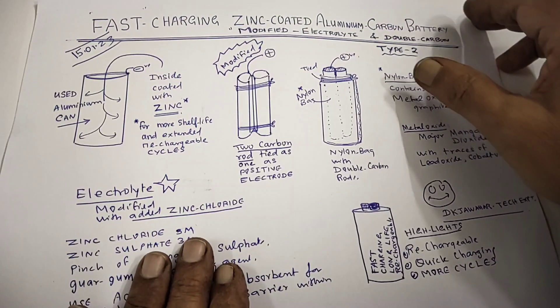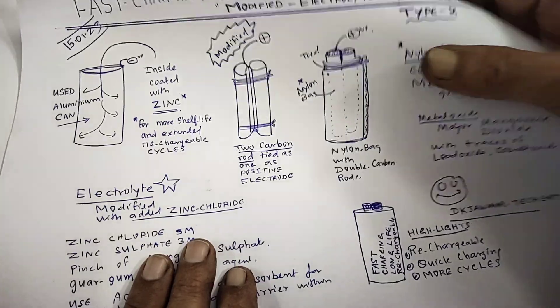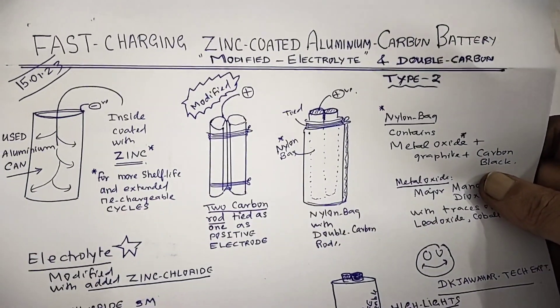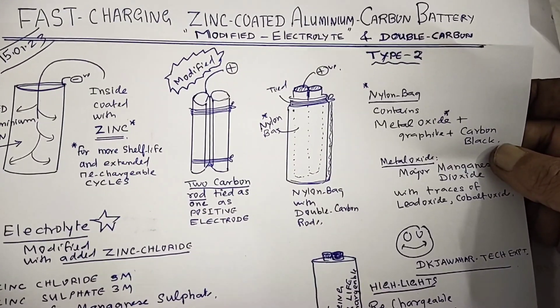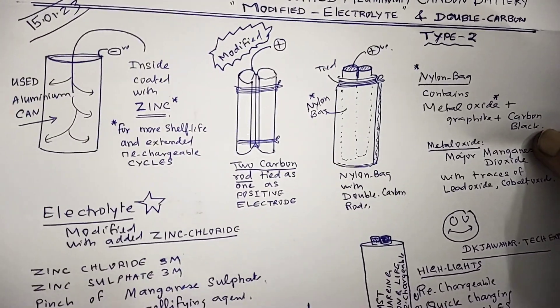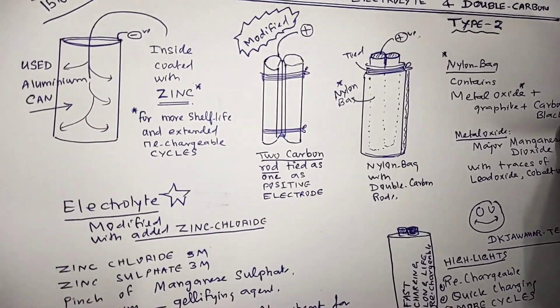Hello friends, today we shall see fast charging zinc coated aluminum carbon batteries with modified electrolyte. I have modified the electrolyte and also I am going to use double carbon, though this will be a Type 2 when compared to my previous one already I have shown that also still running.